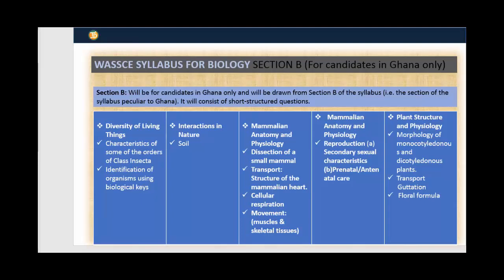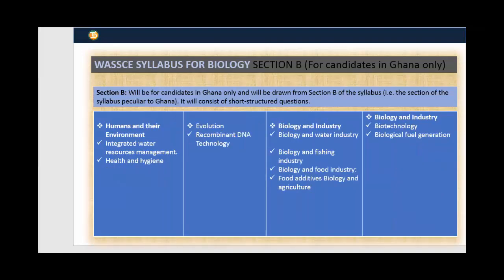Also in Section B, we have diversities of living things, interaction in nature, mammalian anatomy and physiology, plant structure and physiology, reproduction, cellular respiration, movement, muscle and skeletal tissue. Still in Section B, we have biology and industry, with topics like biotechnology and recombinant DNA technology. Please take note these sections are only for candidates in Ghana.